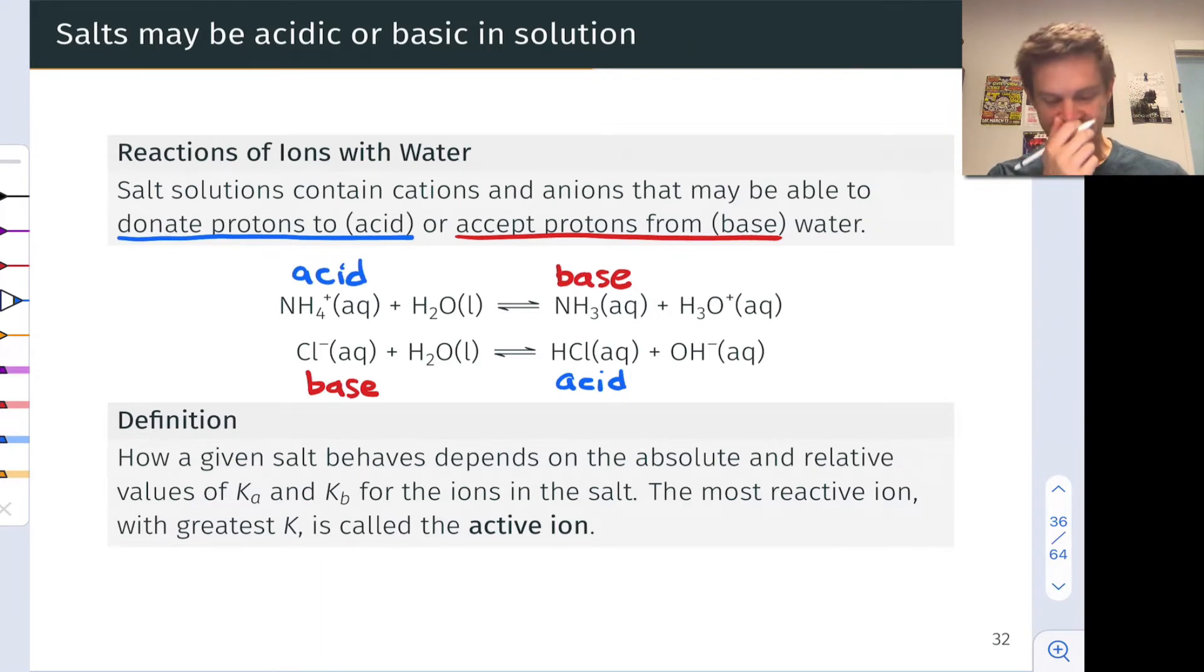Recognize that how a given salt behaves when we take, for example, ammonium chloride and dissolve it in water, depends on the relative values of Ka and Kb for the ions within the salt. Here we can assign a Ka value to the reaction of NH4+ with water, and we can assign a Kb value to the reaction of chloride with water, since chloride is acting as a base.